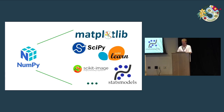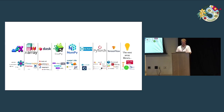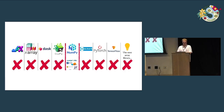If we look at what the ecosystem looks like today, it looks a lot more like this. There's a lot of different array libraries, not just NumPy. There's CuPy, there's JAX, there's PyTorch. And each of these array libraries has their own little ecosystem of tools that have been built on these arrays. And so if you're using NumPy, you kind of look like this — you can still use this great ecosystem of NumPy libraries, but you can't really access things like CuPy or PyTorch.